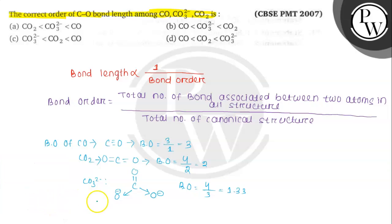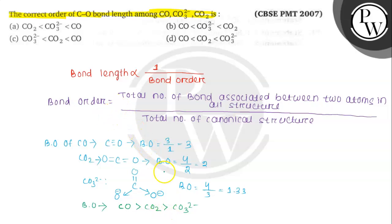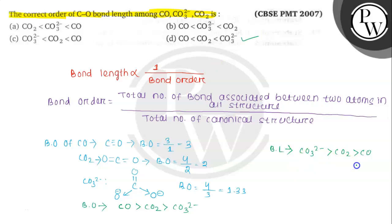Now we arrange CO, CO₂, and CO₃²⁻ on the basis of bond order. The decreasing order of bond order is: CO > CO₂ > CO₃²⁻. But since bond length is inversely proportional to bond order, the order of bond length will be the opposite: CO₃²⁻ > CO₂ > CO. In increasing order of bond length: CO < CO₂ < CO₃²⁻.